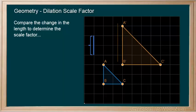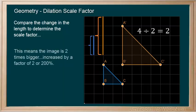Our image in orange has grown to 4 squares. We can use division to compare the ratio of each side and we find 4 divided by 2 equals 2. This means the image is 2 times bigger and therefore increased by a factor of 2 or 200%.